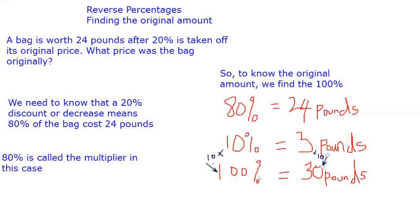So to get 100% from 10% means you multiply 10 by 10. So 100% is 30 pounds, because if you've multiplied this by 10, you've got to multiply this by 10 as well. So the original price of that bag is 30 pounds.